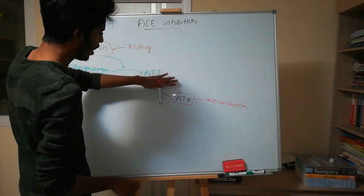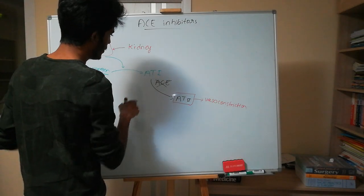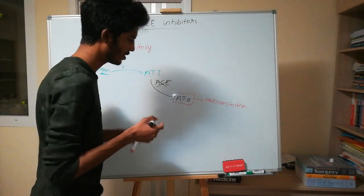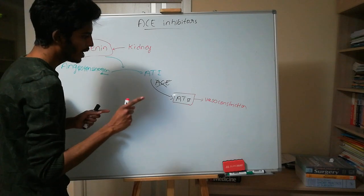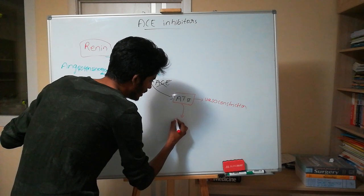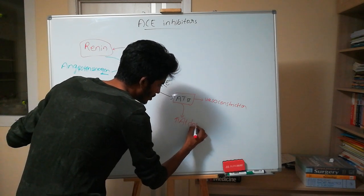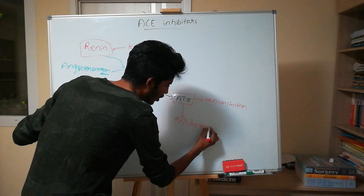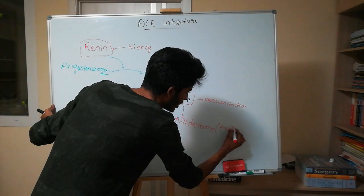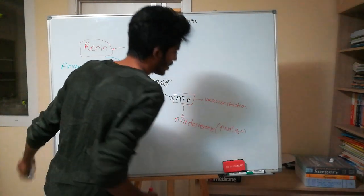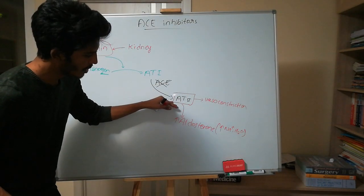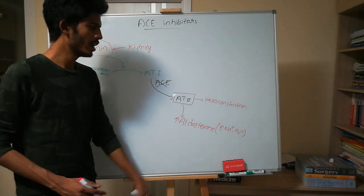When I block this enzyme, there is no conversion of angiotensin one to angiotensin two, so there is no vasoconstriction. Additionally, angiotensin two stimulates aldosterone, which increases sodium and water reabsorption in the kidney, elevating blood pressure. Without ACE, there is no angiotensin two and no aldosterone.